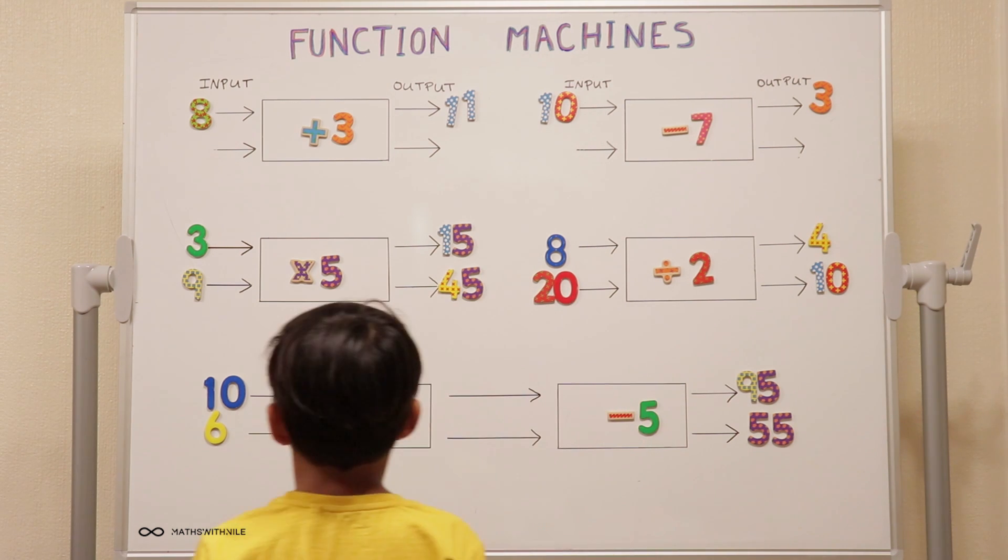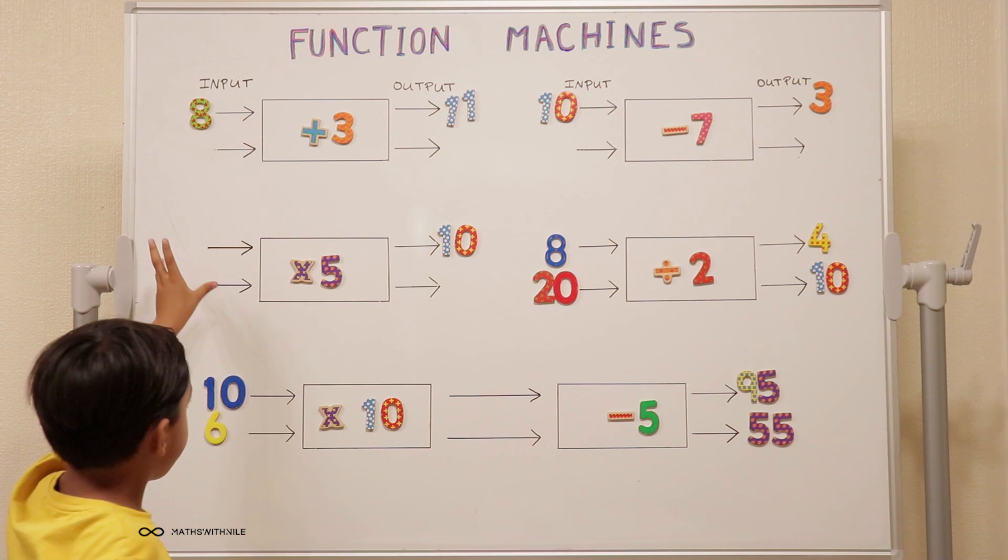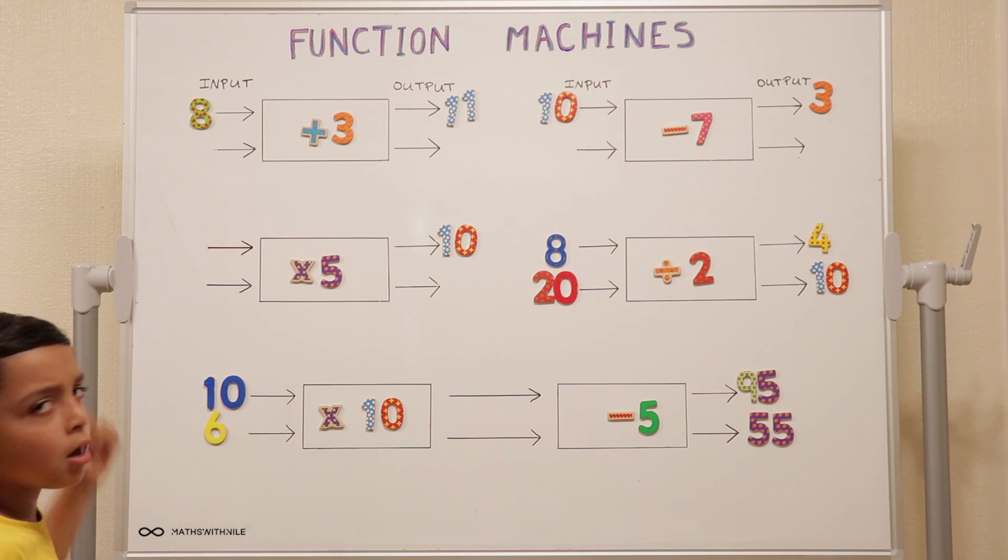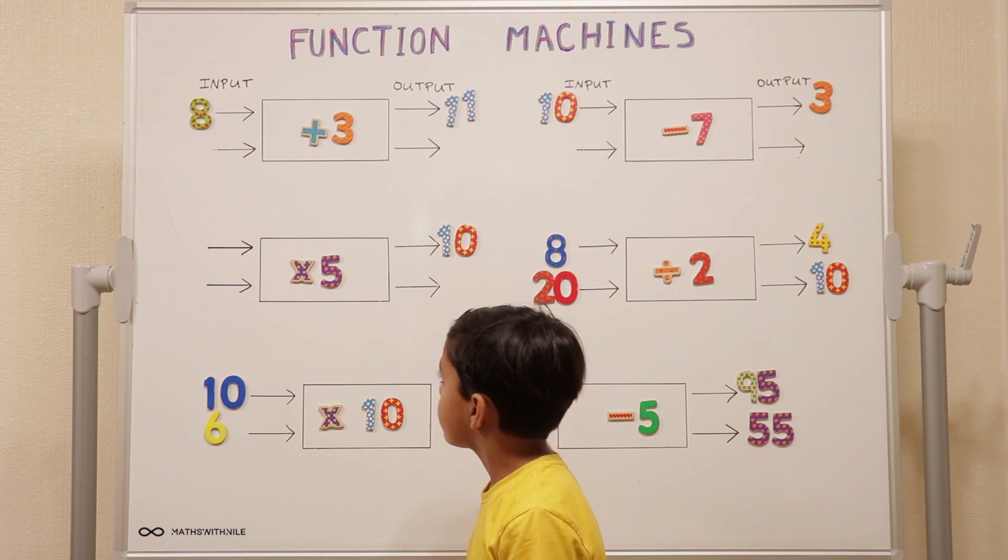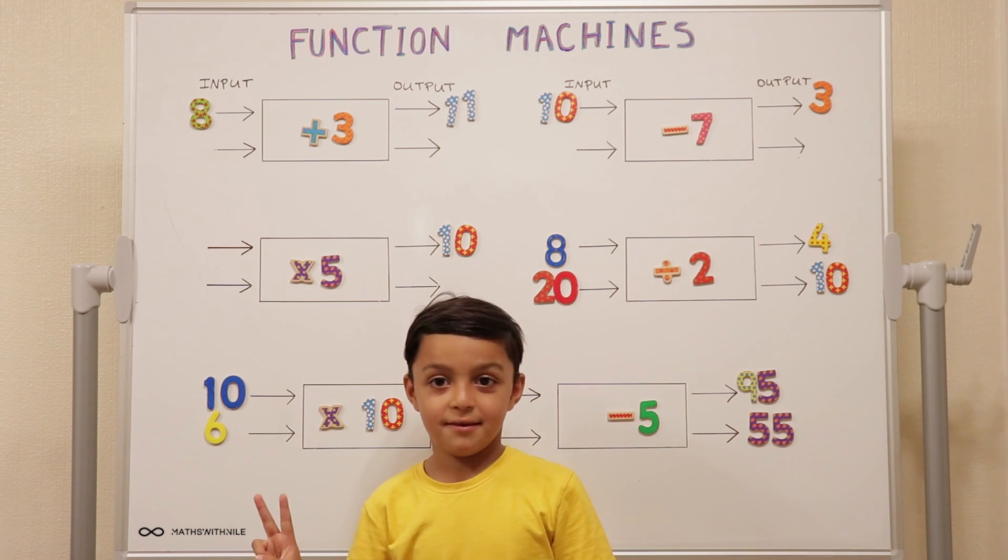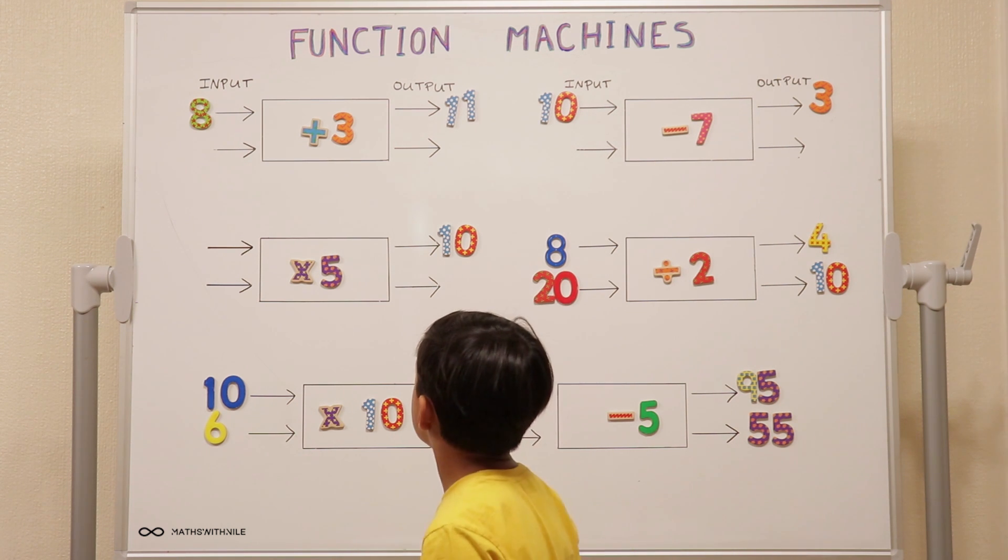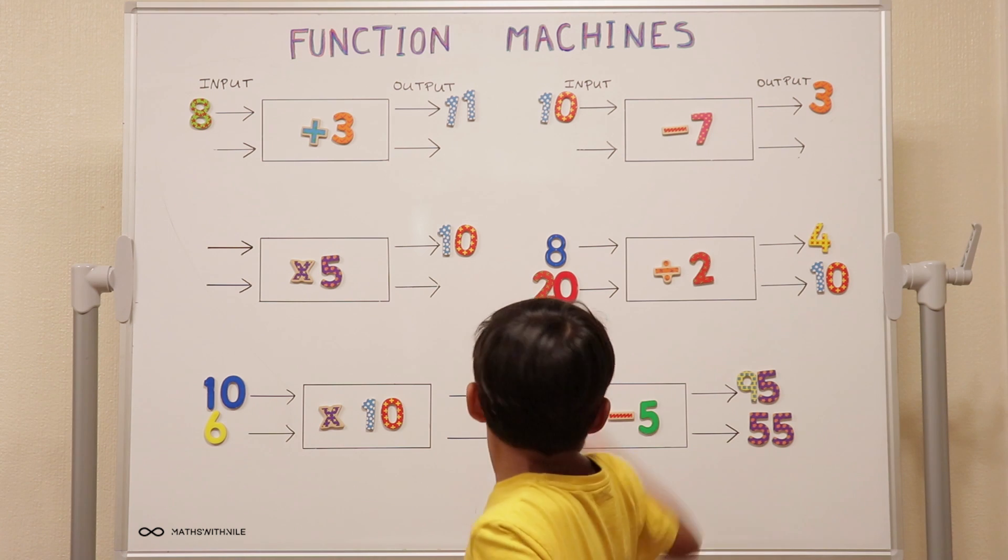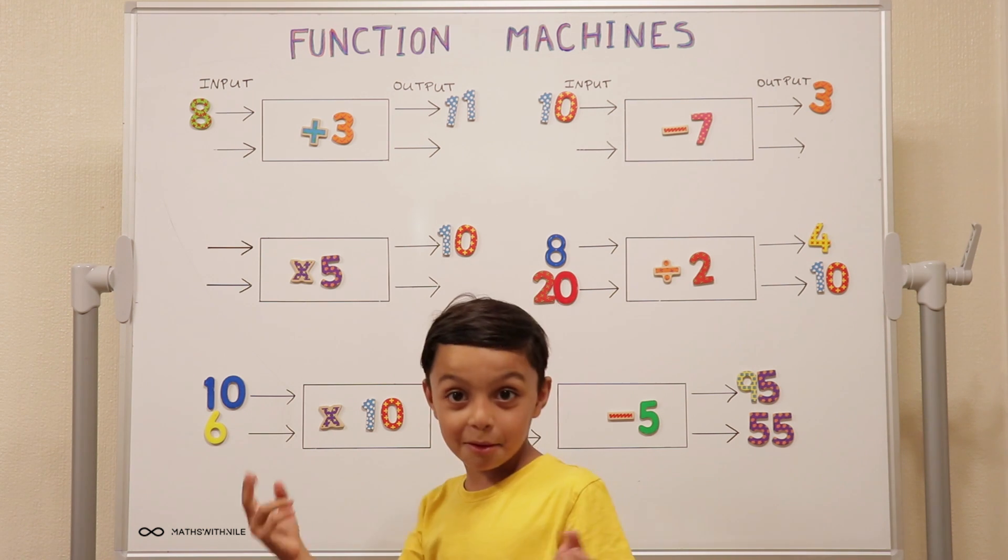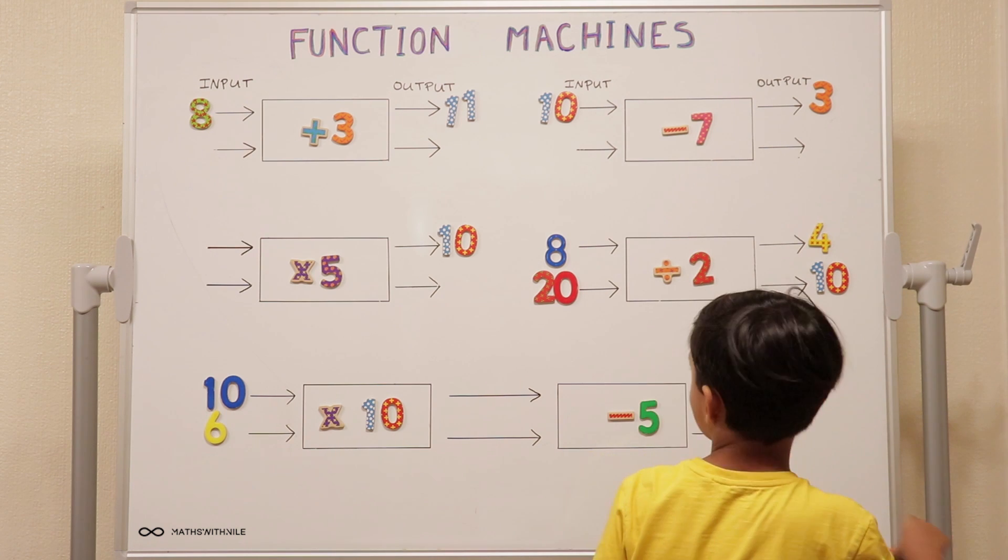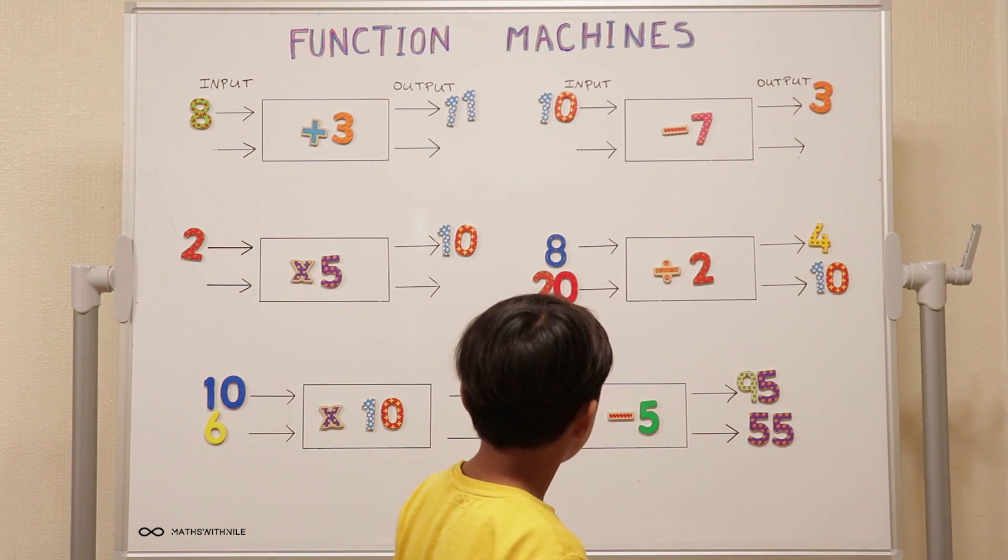Let's do the one with the multiplication. How are you going to work it out? What is it saying? It's saying that something times five will give ten. Two times five is ten. How would you work it out if you had to do the reverse, if you had to start from the output? Do you know what the inverse of times is? Divided. So ten divided by five is two. So how many lots of five is in ten? Two. Very good. So the inverse of times is divided.